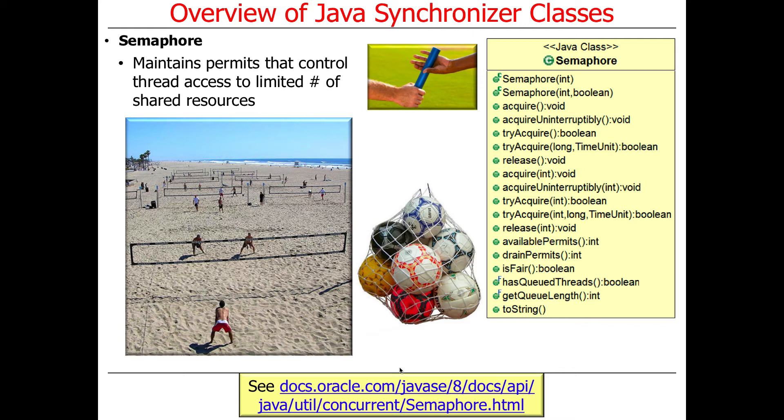Semaphores — you'll get a chance to play with these in assignment 1b. What they do is maintain a count of permits that control the number of threads that can access a limited number of shared resources. For your programming assignment, we'll be using Palantiri as the shared limited resource because there's only N of them, not M where M is a larger number.